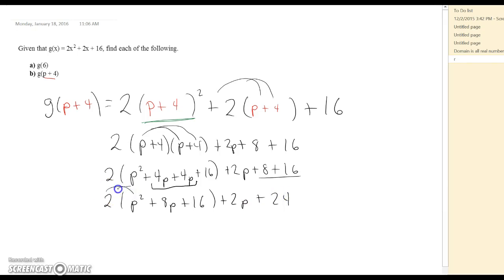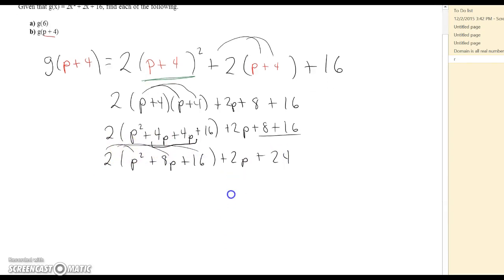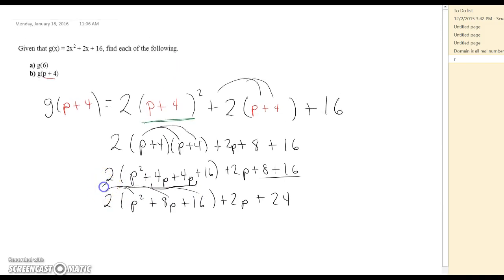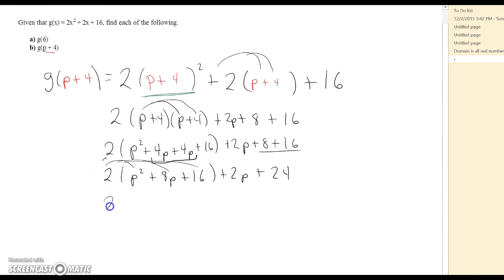All right, now let's bring our 2 inside there. And it's going to give us 2P squared plus 16P plus 16 times 2 is 32 plus 2P plus 24.